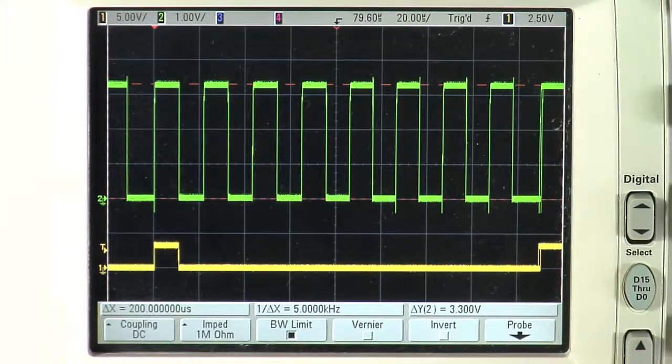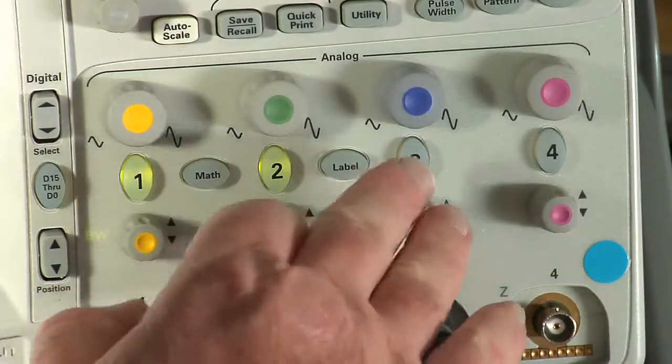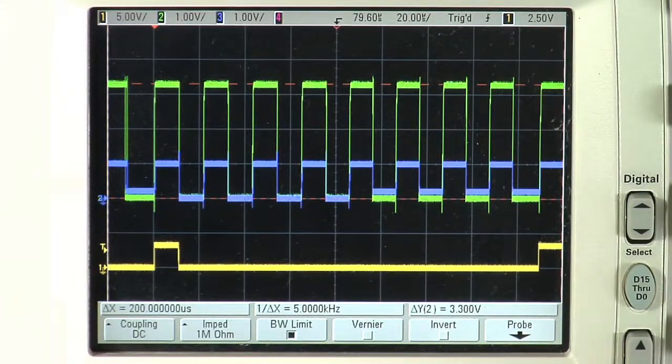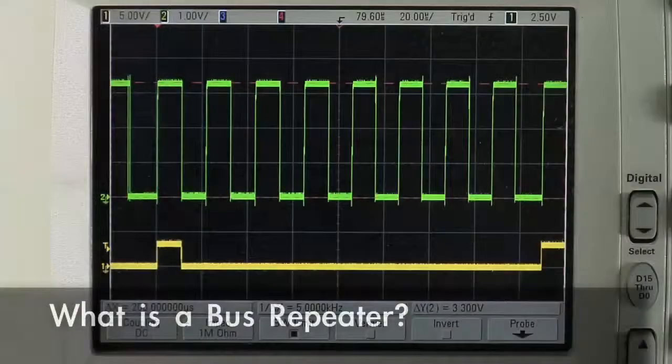The green trace shows the 3.3 volt side of the bus. If I add in the other trace, we see a 1 volt signal. This demonstrates the part making the translation from a 1 volt domain to a 3.3 volt domain.